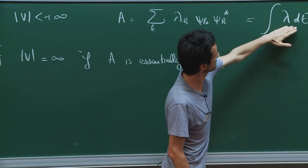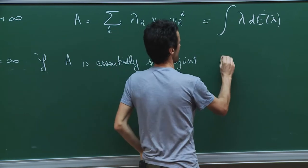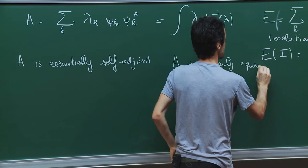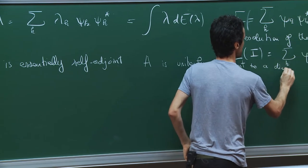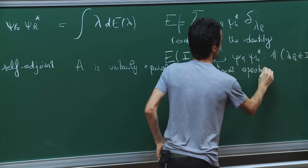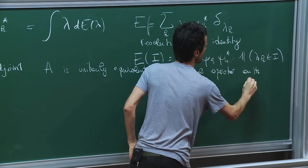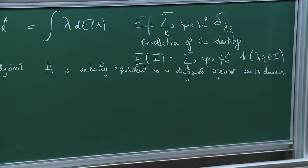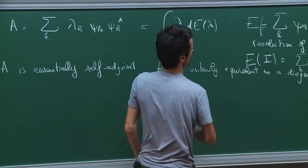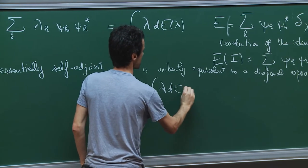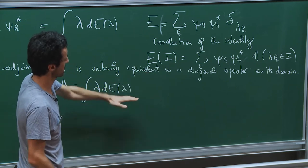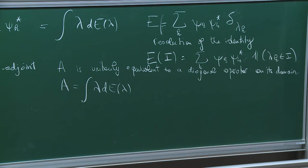If A is essentially self-adjoint, you can still write A as the integral of λ dE(λ), where E is a resolution of the identity. It's the same idea — a spectral projection on the eigenspaces. What we will use is what we call the spectral measure at a vector.